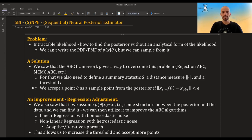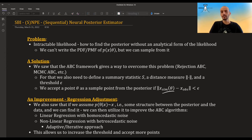And we accept points as a sample point from the posterior if the distance between the simulated x given some theta to the actual x observed, if that distance is below some threshold value, some epsilon.